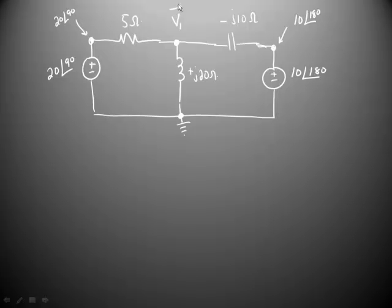We'll call that V1 Phasor. Our strategy with nodal analysis has always been to sum the currents leaving the node. So let's go ahead and draw our arrows in and write our nodal equation.